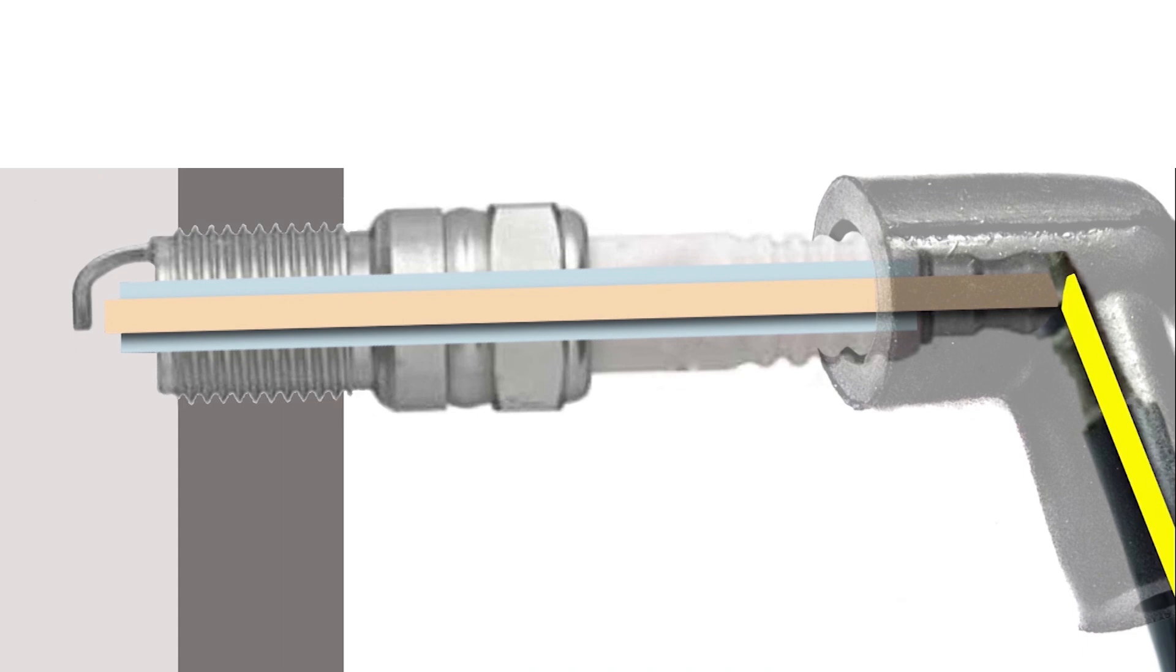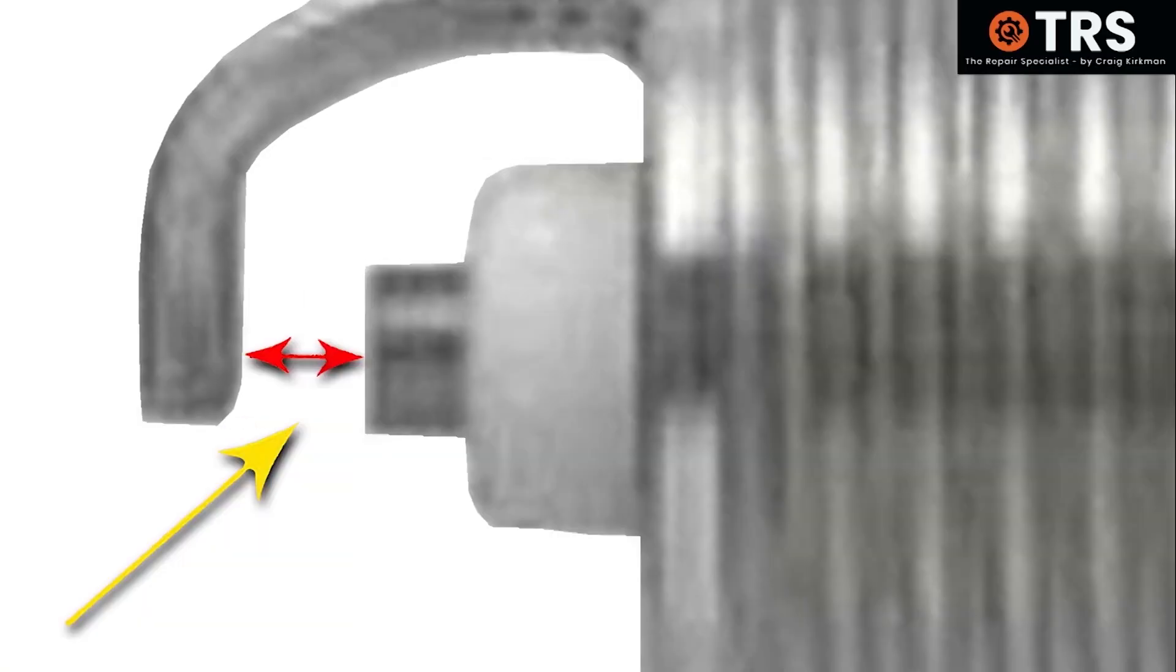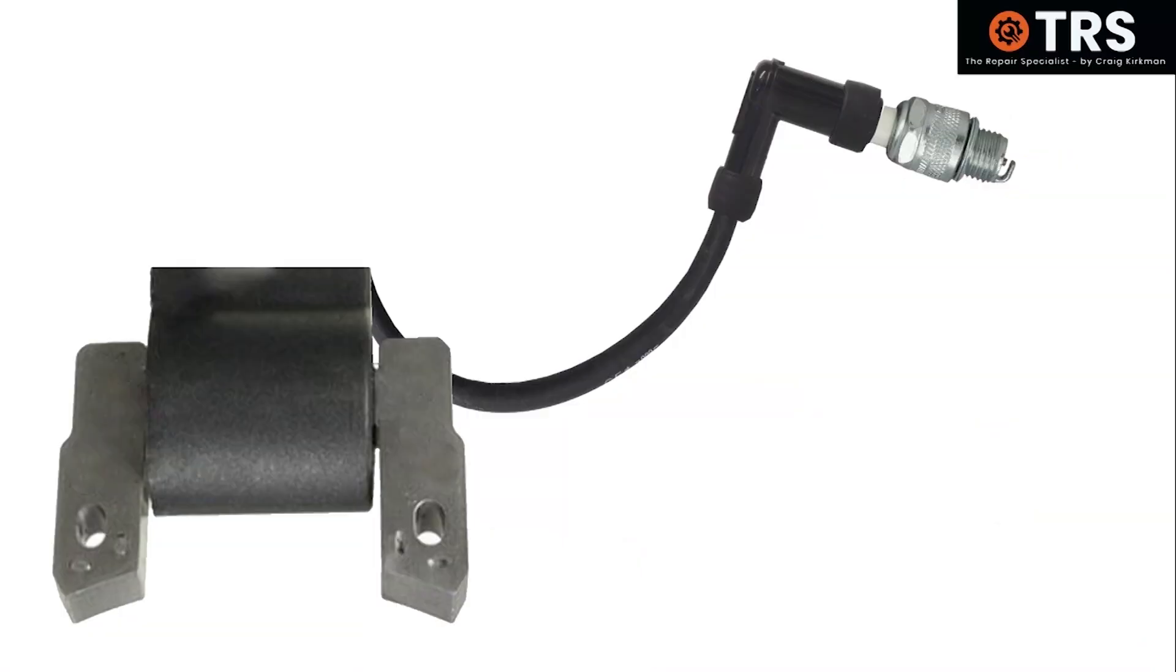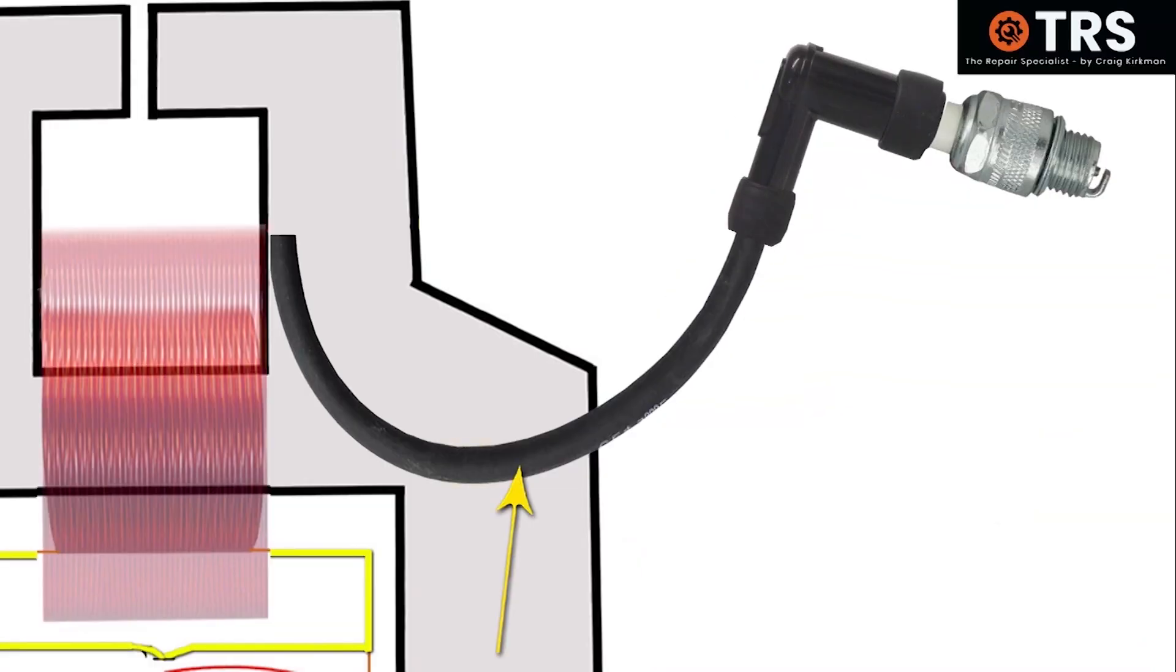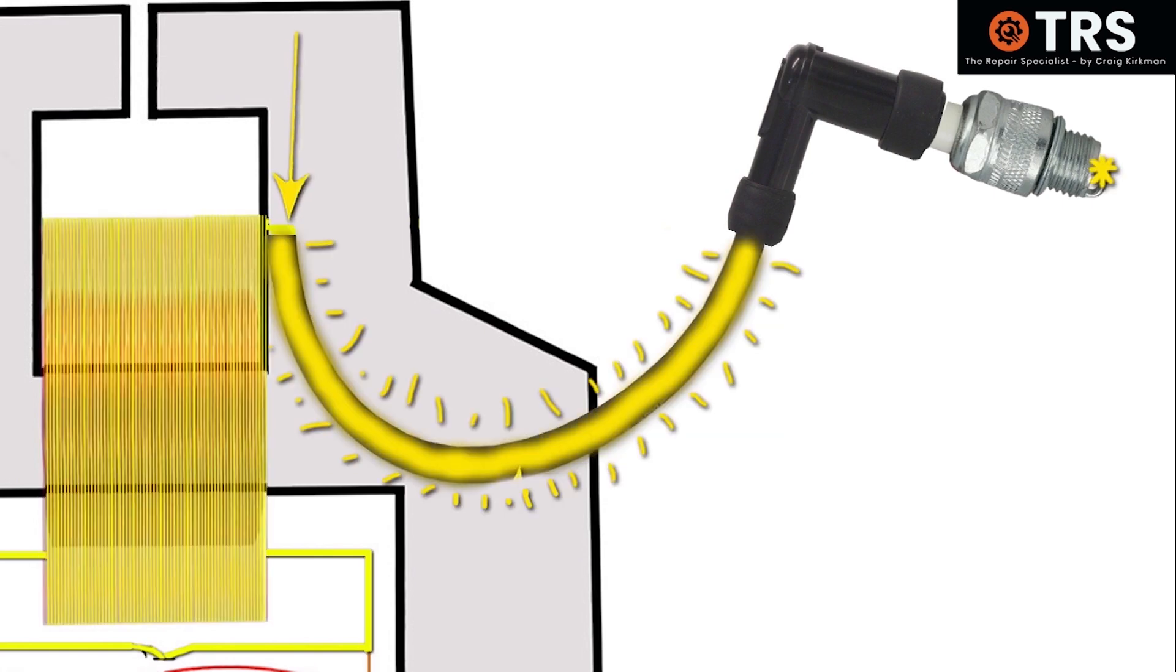It's apparently the same with the spark plug gap. Even if we've got the correct spark plug with the right resistance through it and the current's moving through it well, if the gap is too wide, then the current is going to find it harder to jump across to the ground electrode to create the spark, and that in itself causes resistance.